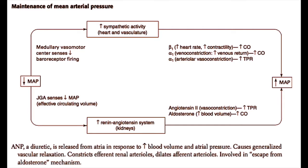When mean arterial pressure increases too much and the heart stretches, atrial natriuretic peptide, or ANP, is released from the ventricular and atrial muscle in the heart. This peptide is a diuretic released in response to increased blood volumes and causes generalized vascular relaxation. It also constricts the efferent renal arterioles and dilates the afferent arterioles, leading to increased urine production. ANP is thought to be the anti-aldosterone, allowing the patient to escape from aldosterone.